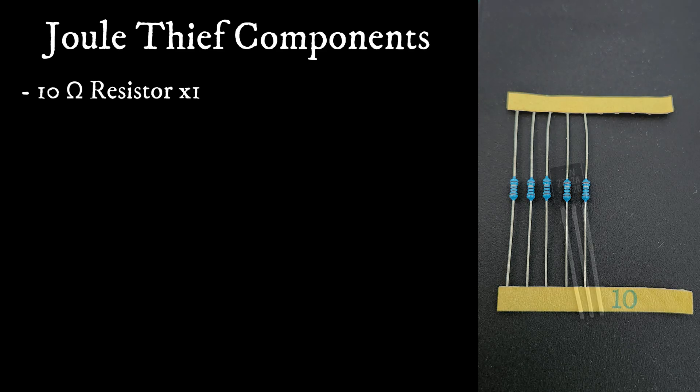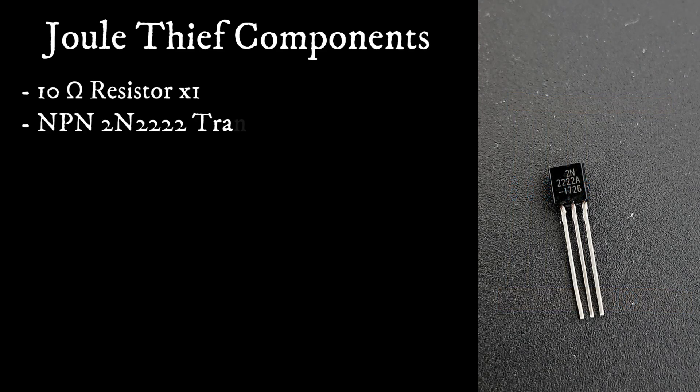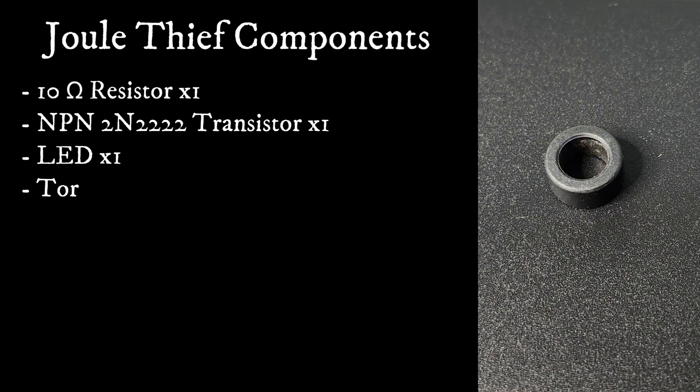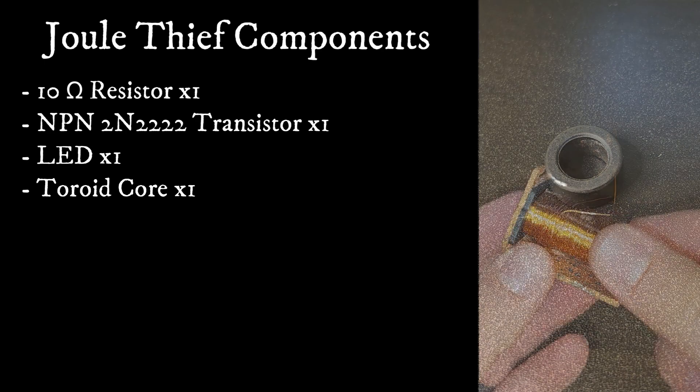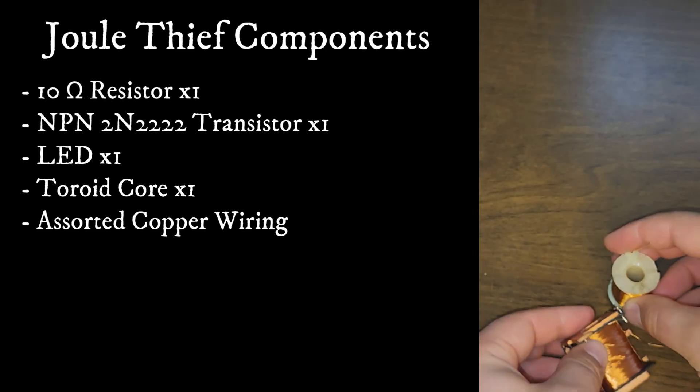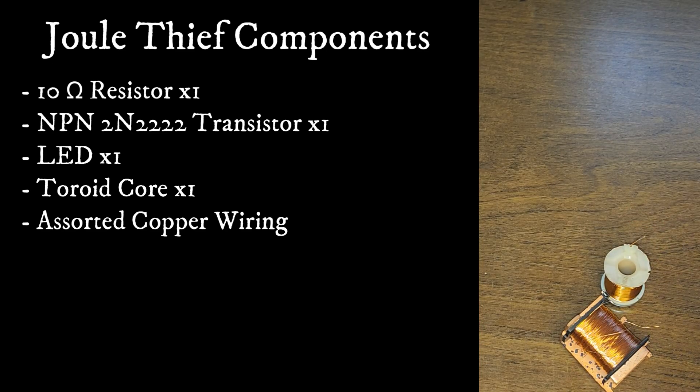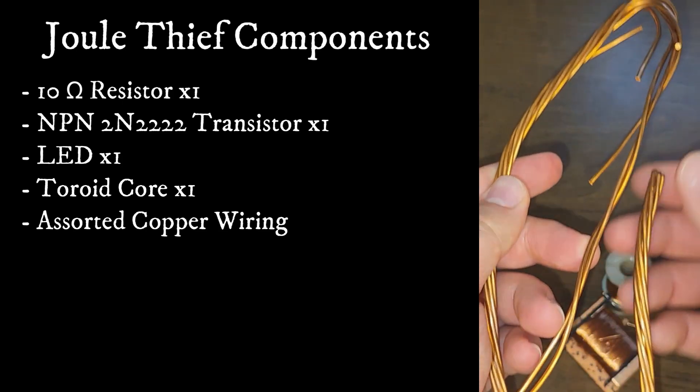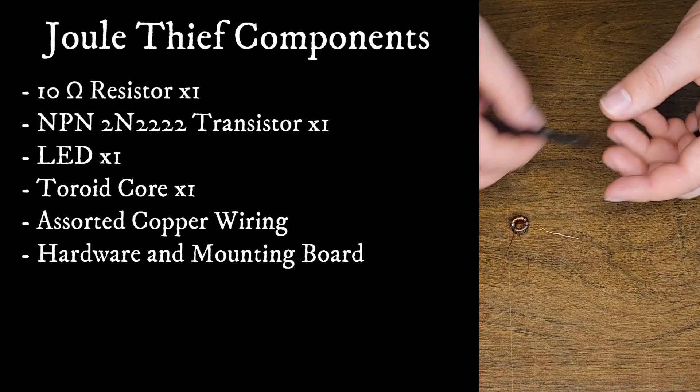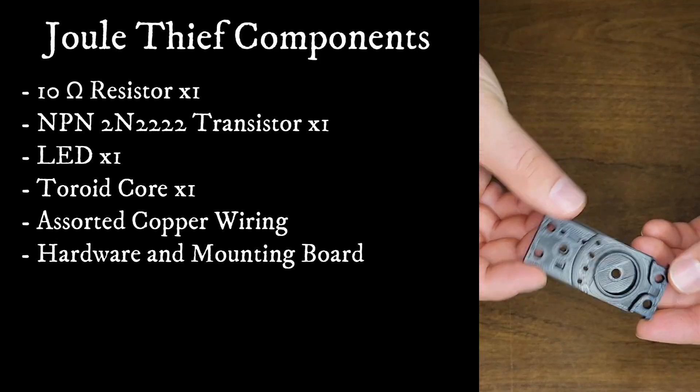One 10 ohm resistor, one NPN 2N2222 transistor, one LED any color is okay, and one toroid core, any diameter will work. I'm using a core with a 10 millimeter inside diameter. Besides these components I'll be using a couple different sizes of copper wiring to connect the various components as well as to make some windings on the toroid core. As well as there's also some fasteners and a 3D printed mounting board that I've made to secure everything and make it look pretty.